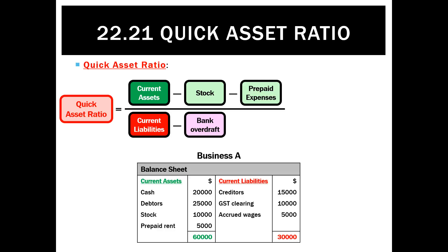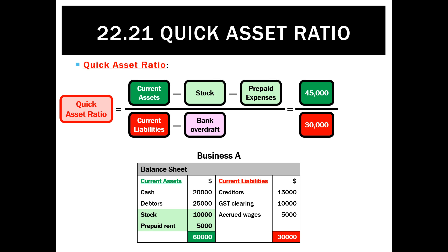For current liabilities, we also get rid of any bank overdrafts. So for business A, if we get rid of the stock and the prepaid rent — which is 15,000 in total from 60 — we end up with 45,000. Under current liabilities, there's no bank overdraft, so that stays at 30,000. We end up with a ratio of 1.5 to 1.